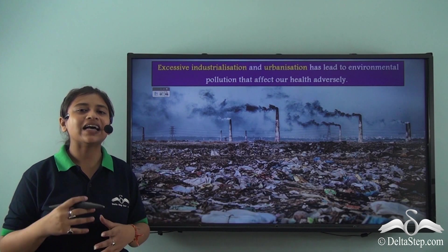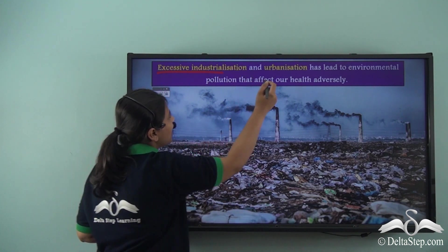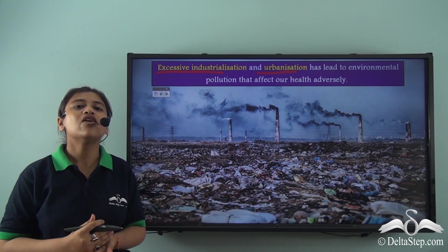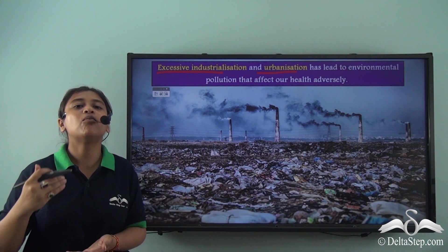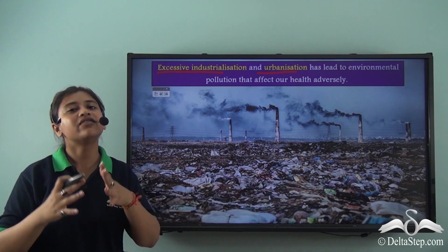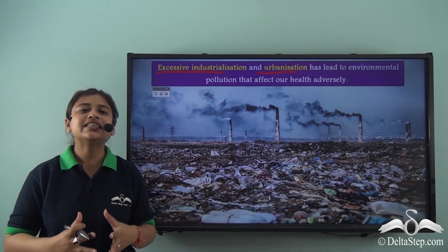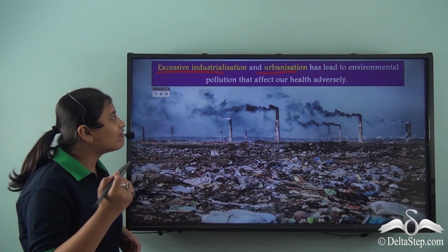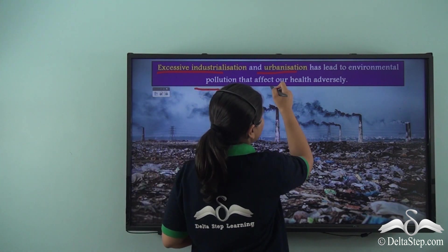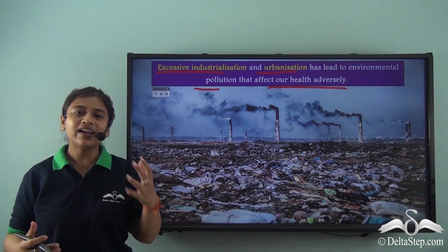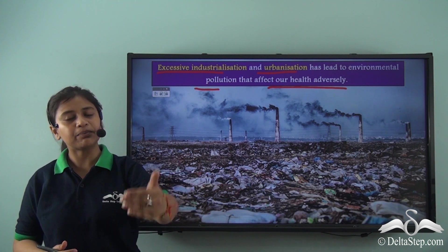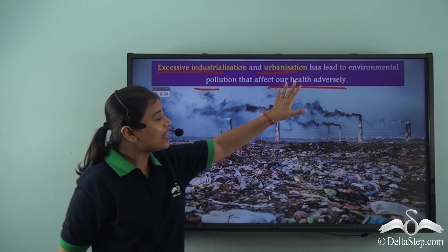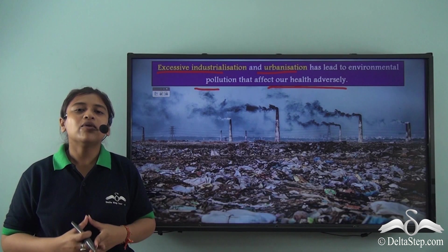Overpopulation has led to excessive industrialization and urbanization. In an overpopulated region, industries have to work even harder to fulfil the needs of the people living there. However, in order to industrialize and meet those needs, industries are leading to environmental pollution that affects the health of people. So while trying to fulfil people's needs, they are simultaneously polluting the environment and adversely affecting the very people they were working for. It's almost a trap.